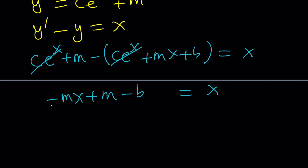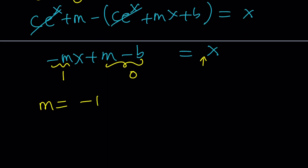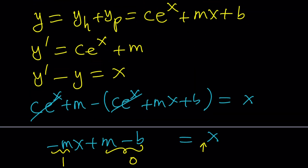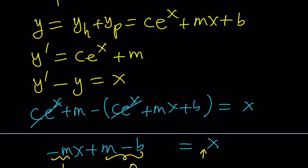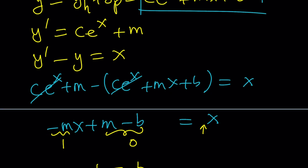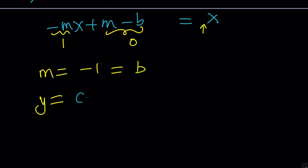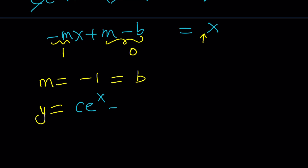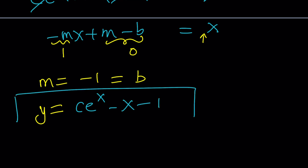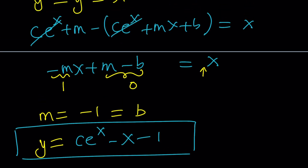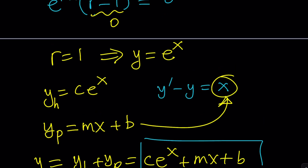These two sides must be equal for all values of x. So the coefficient of x must be negative 1 equals 1, meaning m equals negative 1. And the constant term m minus p must equal 0, so p equals negative 1 as well. Both m and p are negative 1, which gives us the general solution: y equals c·e^x minus x minus 1, where c is a real constant.